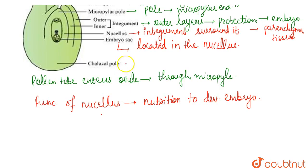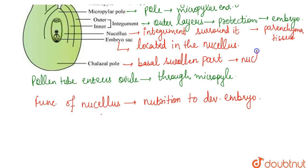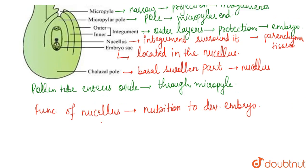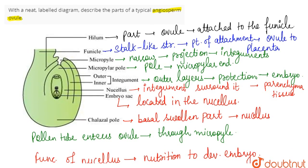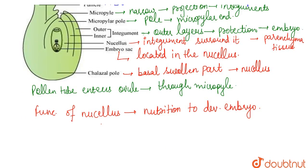Now, if we talk about the chalazal pole — it is the pole present at the basal swollen part. Chalaza is the basal swollen part of the nucellus from where the integuments originate. So there are two opposite poles: one is the micropylar pole, and the other is the chalazal pole. This is the complete description of the angiospermic ovule.